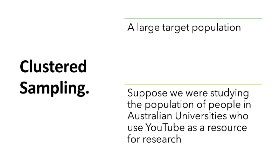We could have say five different universities that are randomly chosen — those would be five different clusters, with each university being a cluster. We can then choose to randomly select universities and use all the students in the selected universities, or randomly select universities with a sample of students included in the study.